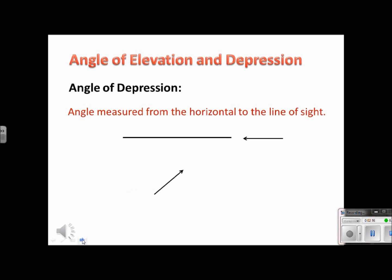The only difference is that when we're talking about the angle of depression, the horizontal is in the sky, above the ground, where on the angle of elevation, it was on the ground.